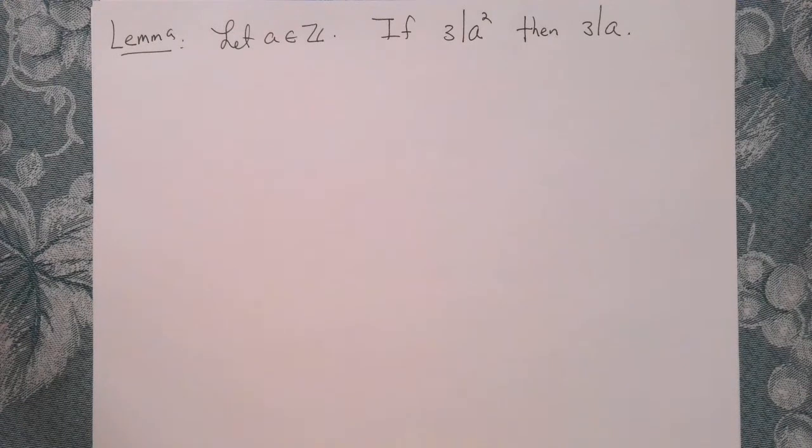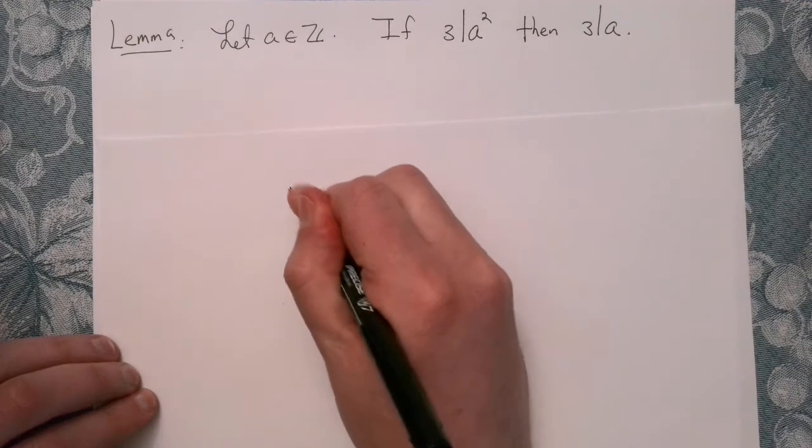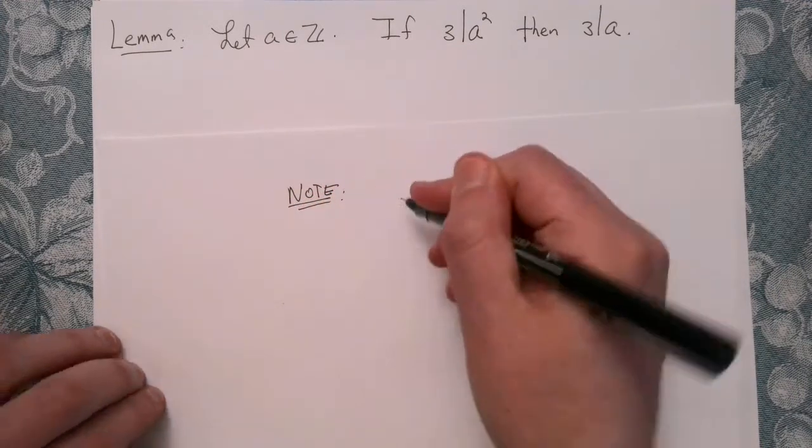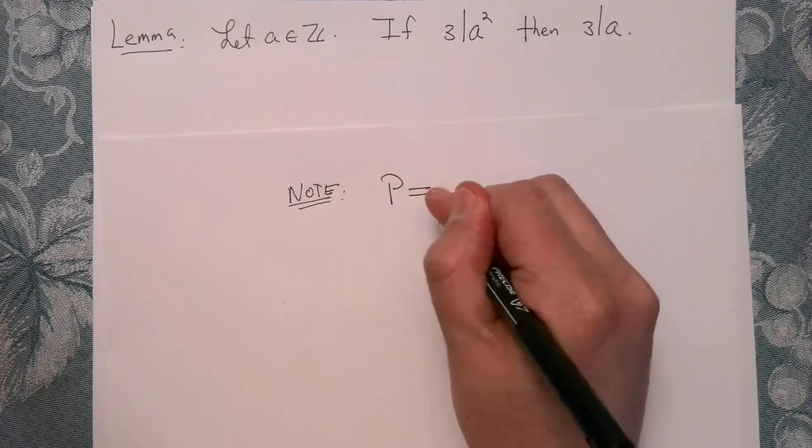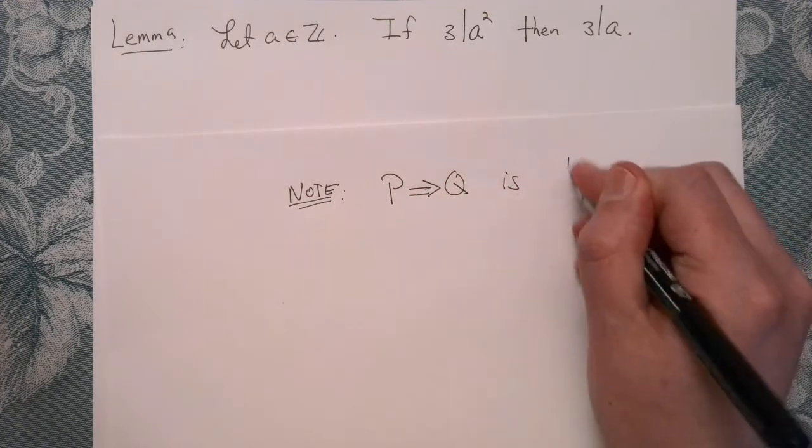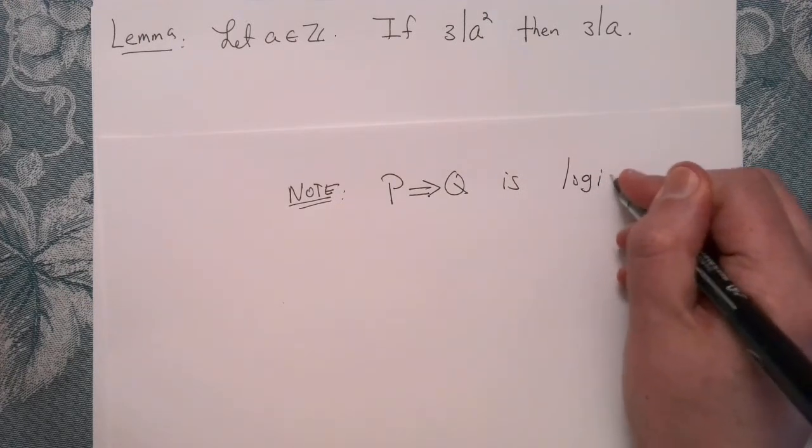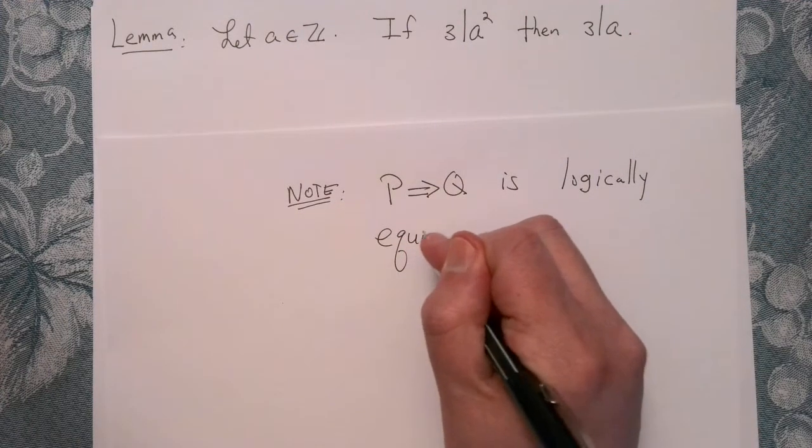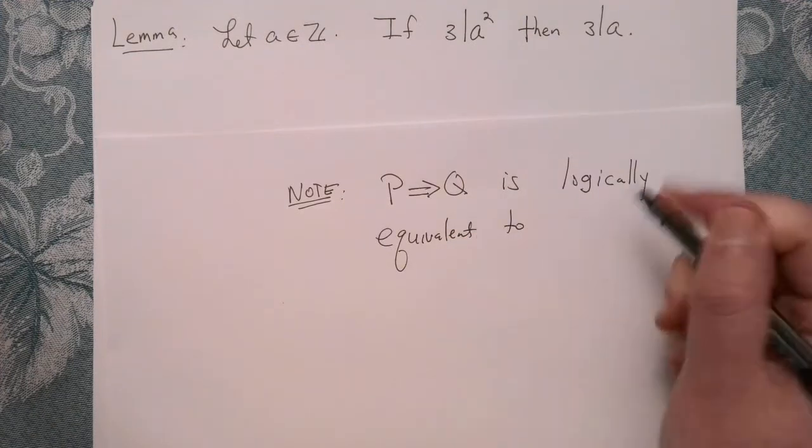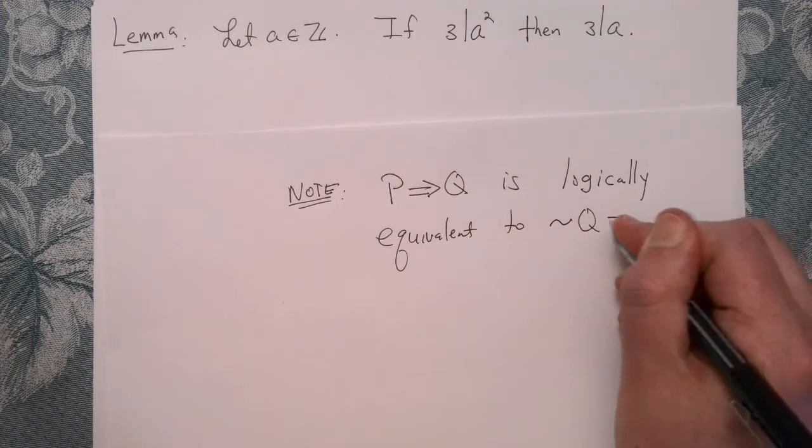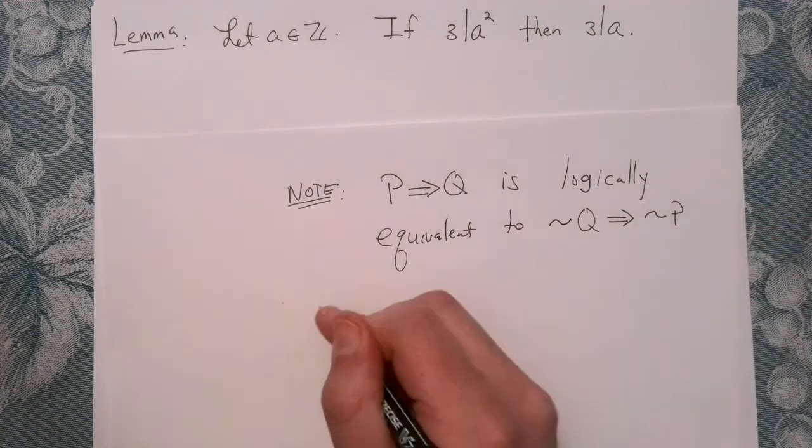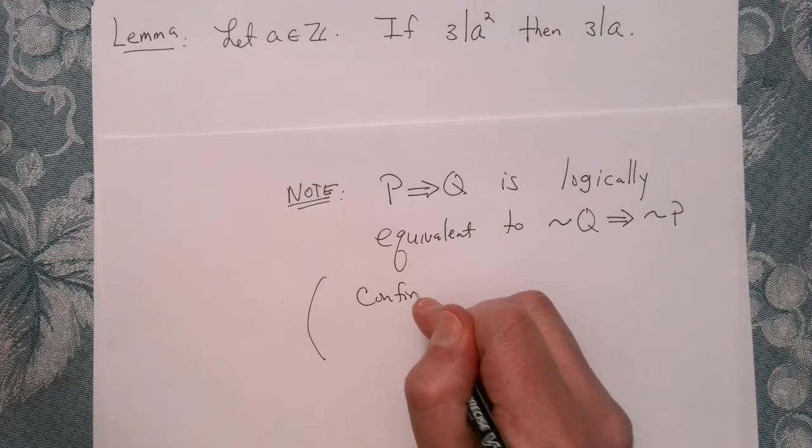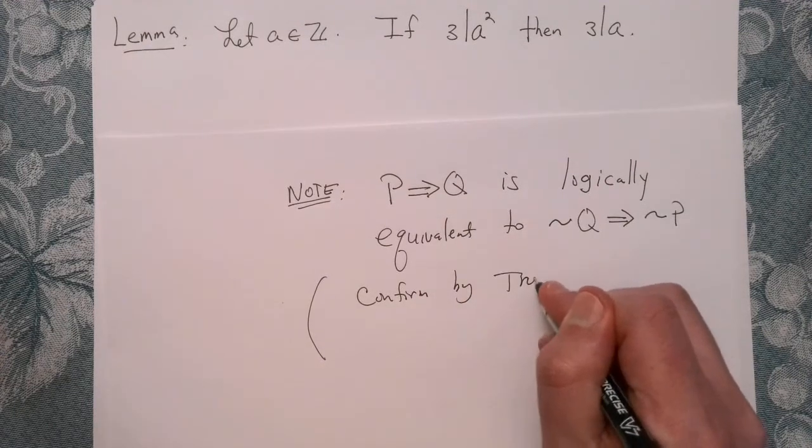And we're going to prove this using the contrapositive. And you want to remember that the contrapositive is logically equivalent to the original conditional. So note that P implies Q is logically equivalent, and you can prove this just by checking the truth table, to not Q implies not P. So confirm this by constructing the truth table.